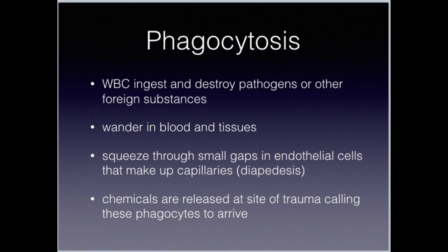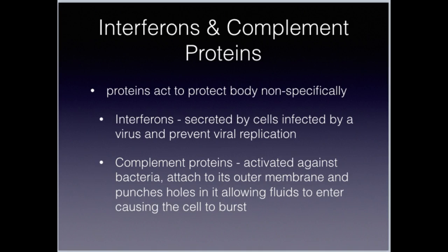Phagocytosis I've explained. Now, protective proteins are an area we haven't talked about much. There are two groups — they act in a non-specific way to protect the body. The first are called interferons: a group of proteins secreted by cells infected by a virus. They diffuse to surrounding cells, preventing the virus from connecting and replicating — they interfere with viral replication. Interferons also activate our natural killer cells and macrophages. The second type is a complement protein.